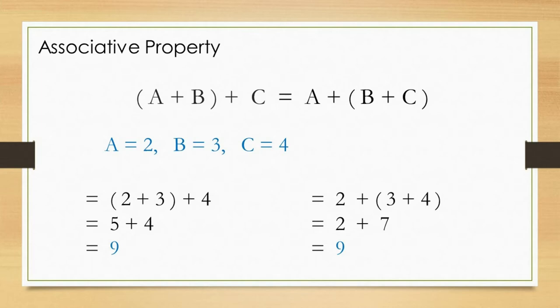Next, let us apply these numbers into the right side of the expression. The operation stated inside a bracket should be performed first. 3 plus 4 is equal to 7. Then, 2 plus 7 is equal to 9. The right side of the expression resulted in the same result as the left side, which is 9.